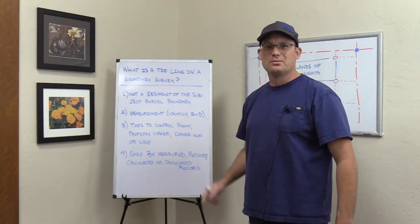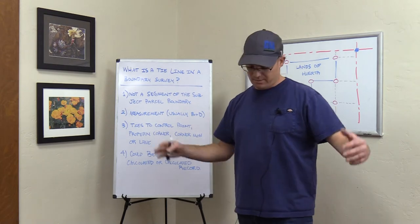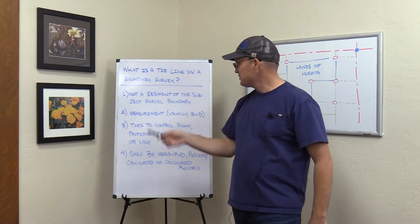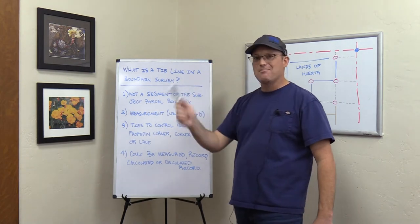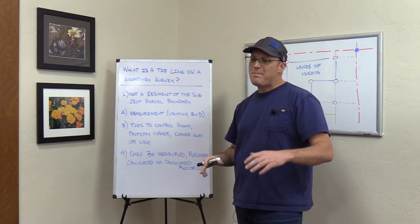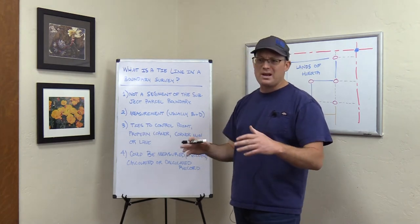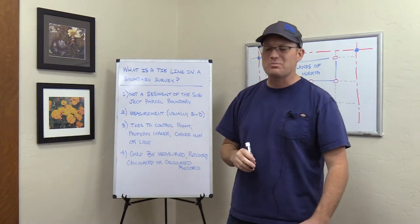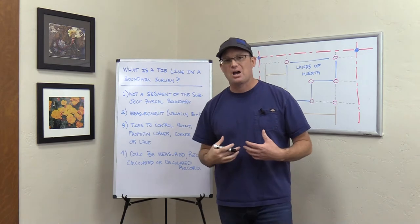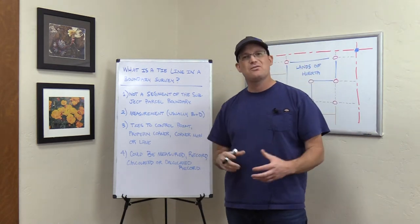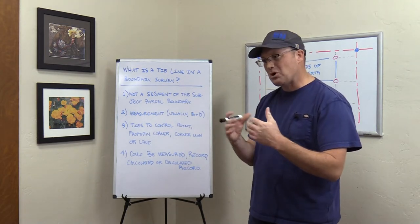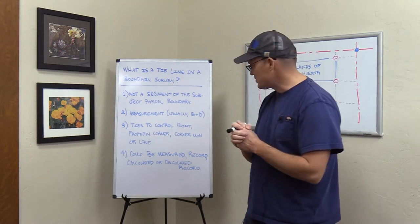Hey guys, it's Landon Blake with Redefine Horizons, doing a video here to answer a simple question — it appears to be simple. What is a tie line in a boundary survey? This video is kind of a mix of boundary surveying know-how and a little bit of CAD standards thrown in. I'm going to define what a tie line is at my shop here at RH. Your shop may define it a little bit differently, but the core part of this should apply across different surveying companies.